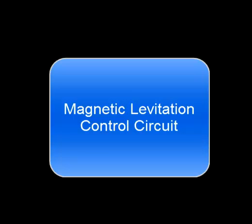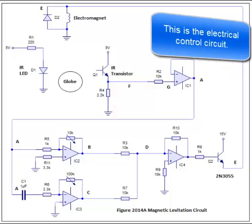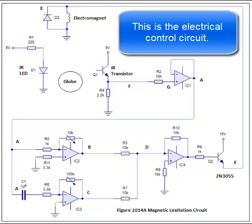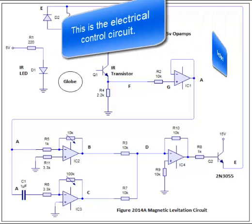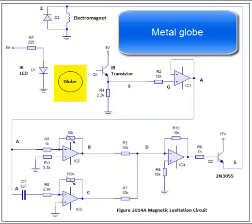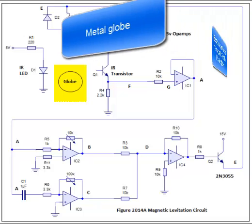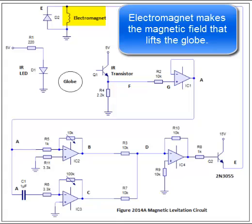Magnetic levitation control circuit. This is the electrical control circuit. This is the metal globe that is levitated. The electromagnet makes the magnetic field that lifts the globe.